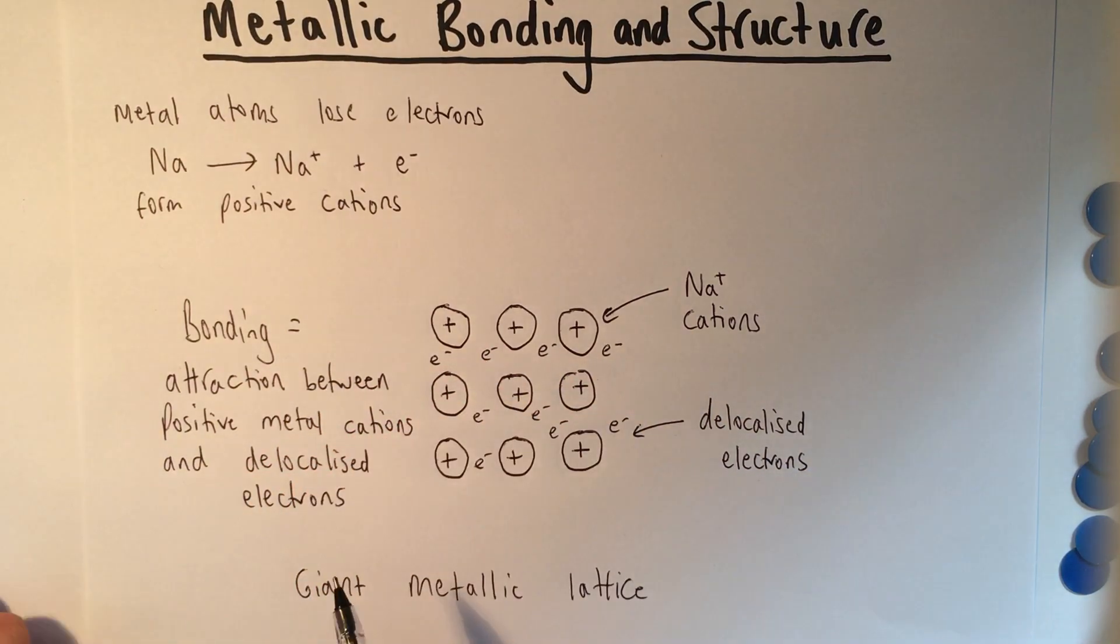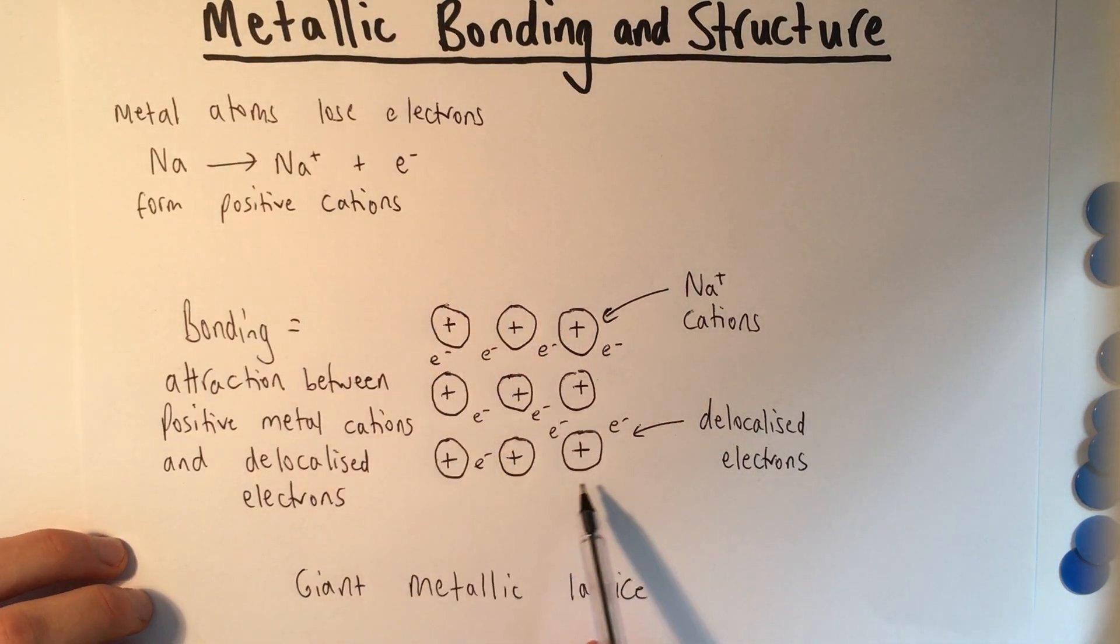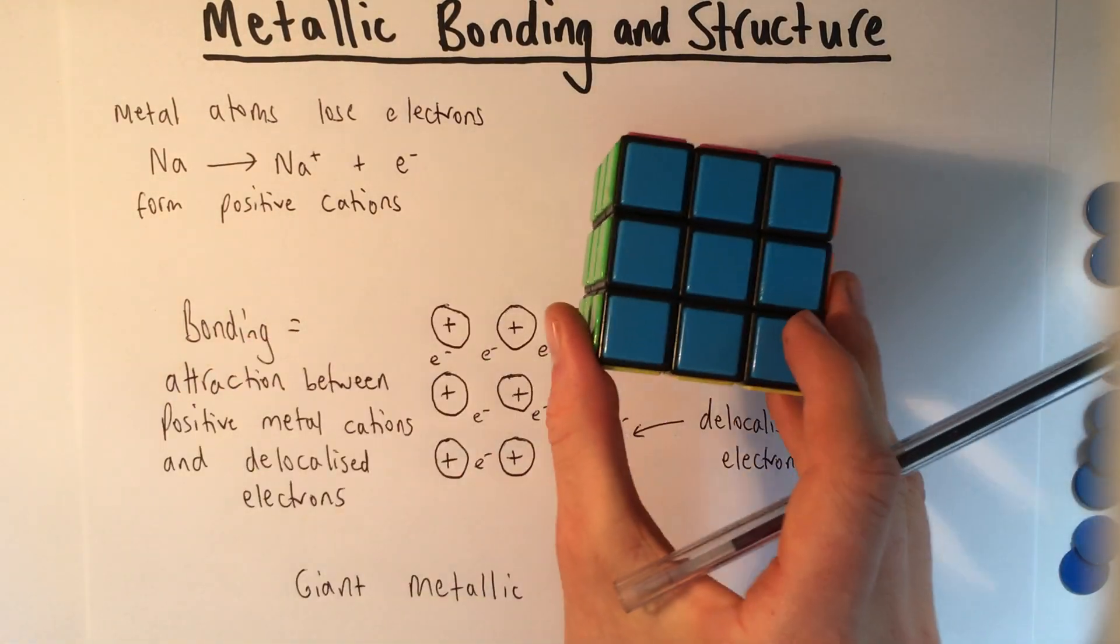So that is why metals bond the way they do. That's the structure that they form. Although remember, it's 3D.